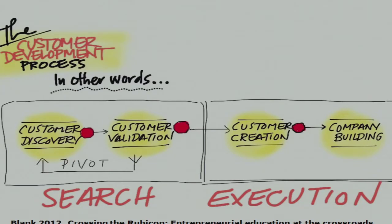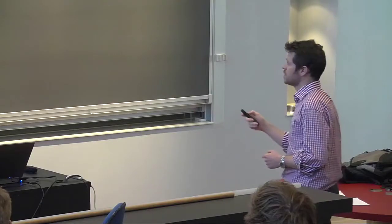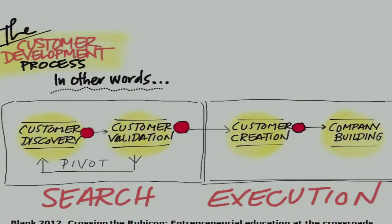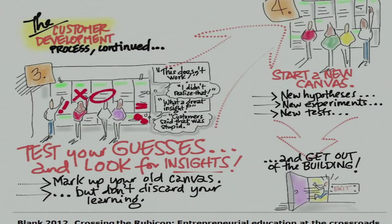One suggestion from a popular reference suggests this pivot model where you have customer delivery leading on to customer valuation, and iterate around these two, then on to customer creation and company building. You then test your hypotheses and look for insights. The point is not just to get a yes or no answer — the point is to learn from it. What were the crucial aspects? What parts of your prototyping and testing were valuable and which weren't?